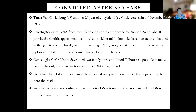A third case involved Tanya Warren and her 20-year-old boyfriend Jacob, who were killed in November 1987. DNA from the killer found at the crime scene was sent to Parabon Nanolabs — a company that not only analyzes genotyping data for DNA fingerprinting but can also create a possible image of what the suspect might look like based on scientific information within the DNA sequence. Using this, they created an image of what the killer might look like based on traits encoded in the genetic code.